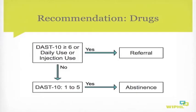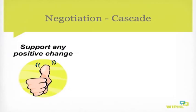For drug use, if the DAST-10 score is 6 or greater, or if the patient admits to daily use or injection drug use, a referral is clearly indicated. If the DAST score is less than that and there is no daily use and no injection use, a recommendation of abstinence can be issued in a general medical setting. If a patient is unwilling to maintain low-risk drinking limits, perhaps they're willing to cut down some. Some patients will not be ready to change at all.